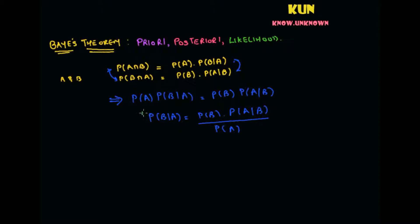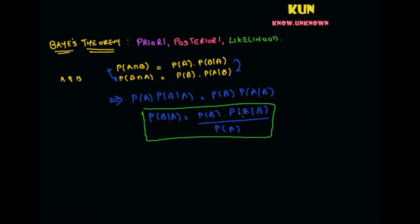This is what the Bayes theorem is about. It says that the conditional probability of B, given that event A has occurred, can be found from the probability of A, the probability of B, and the probability of A given B. But the deeper meaning may not yet be very clear because the philosophy has not come into the picture.